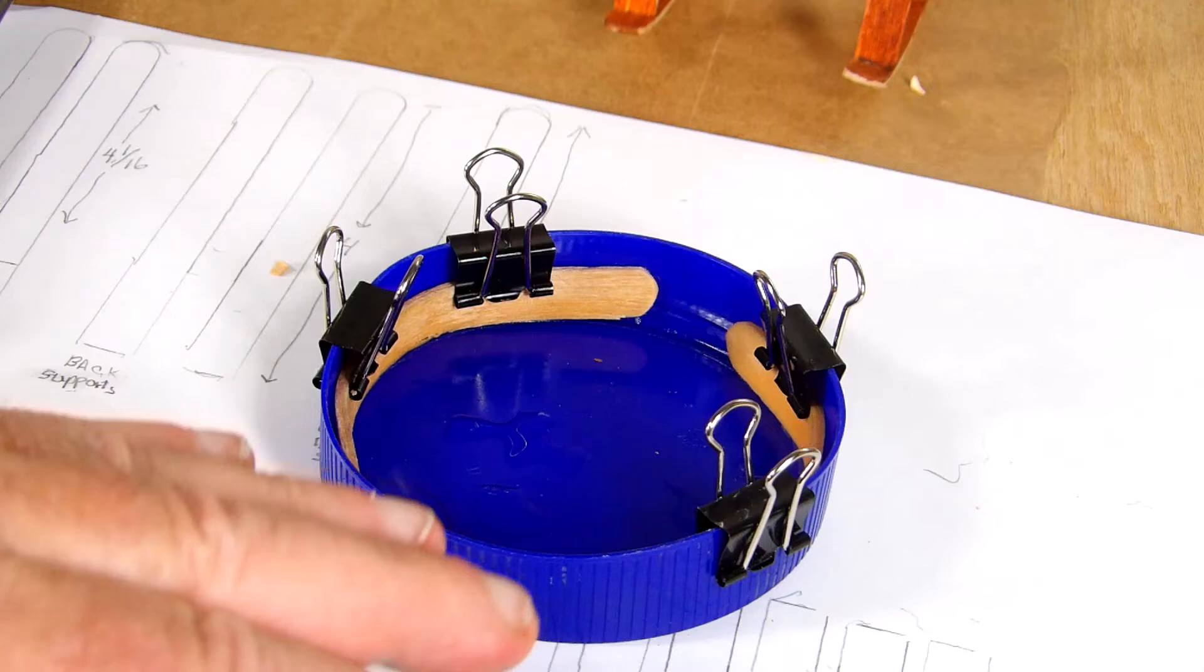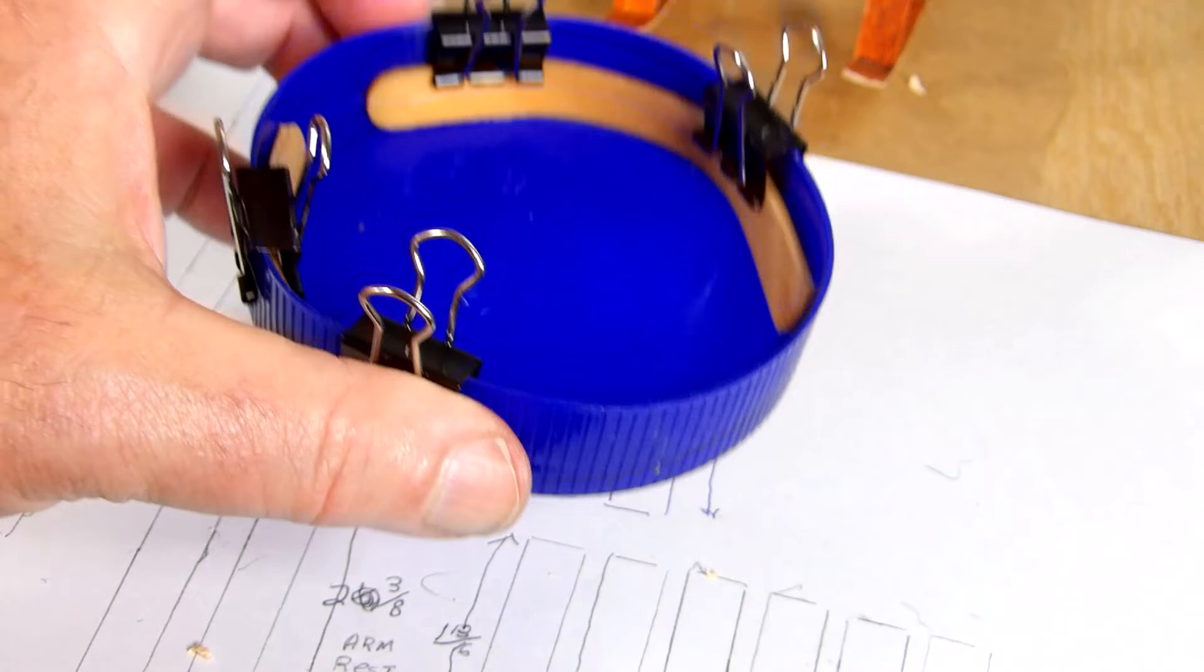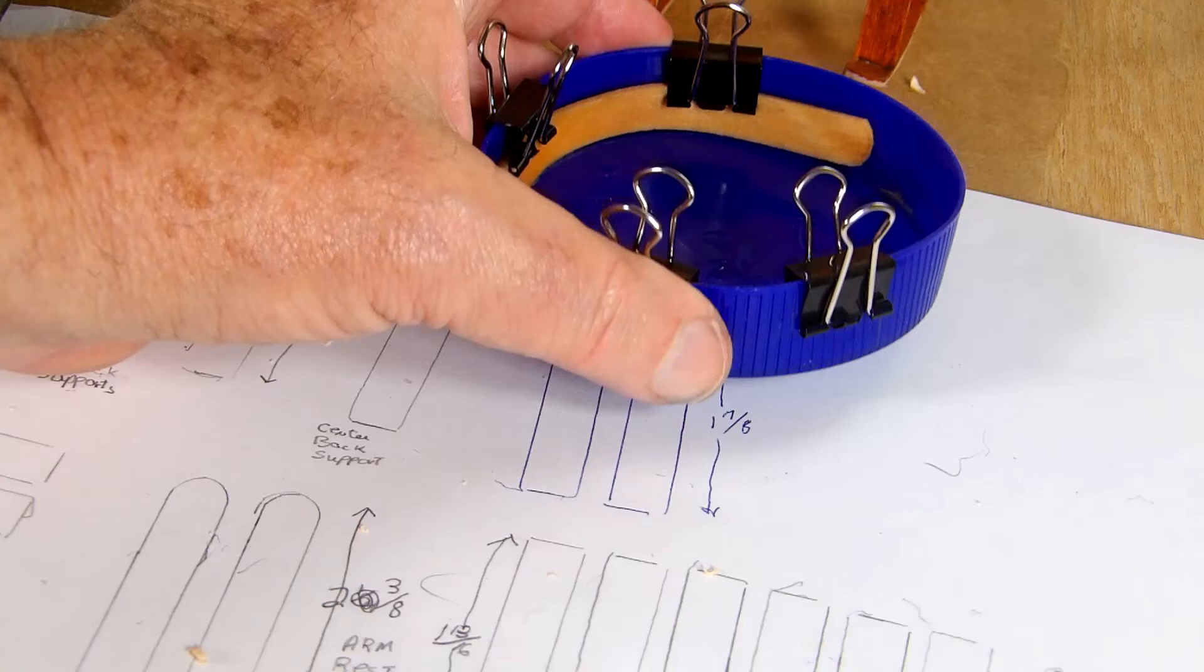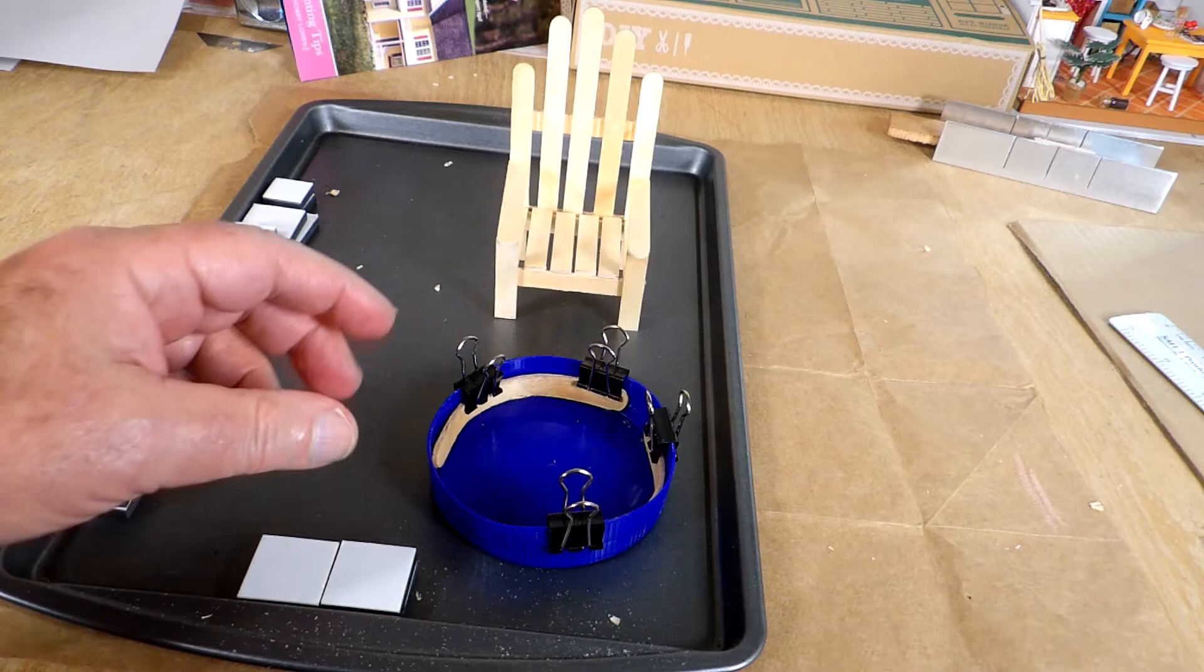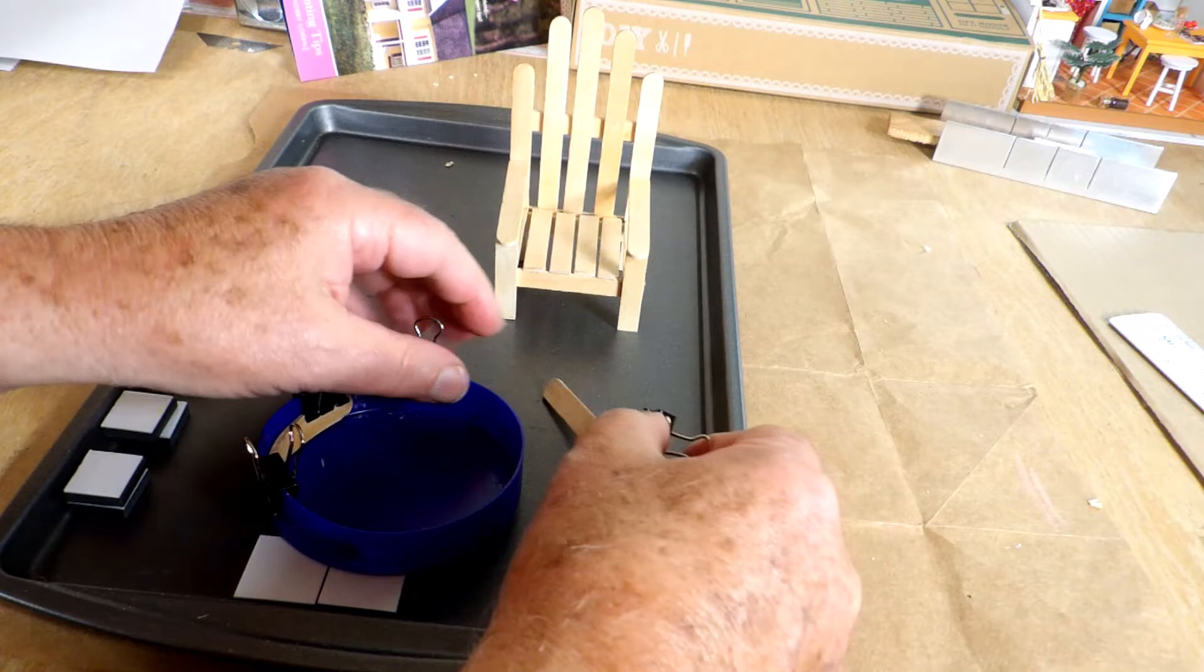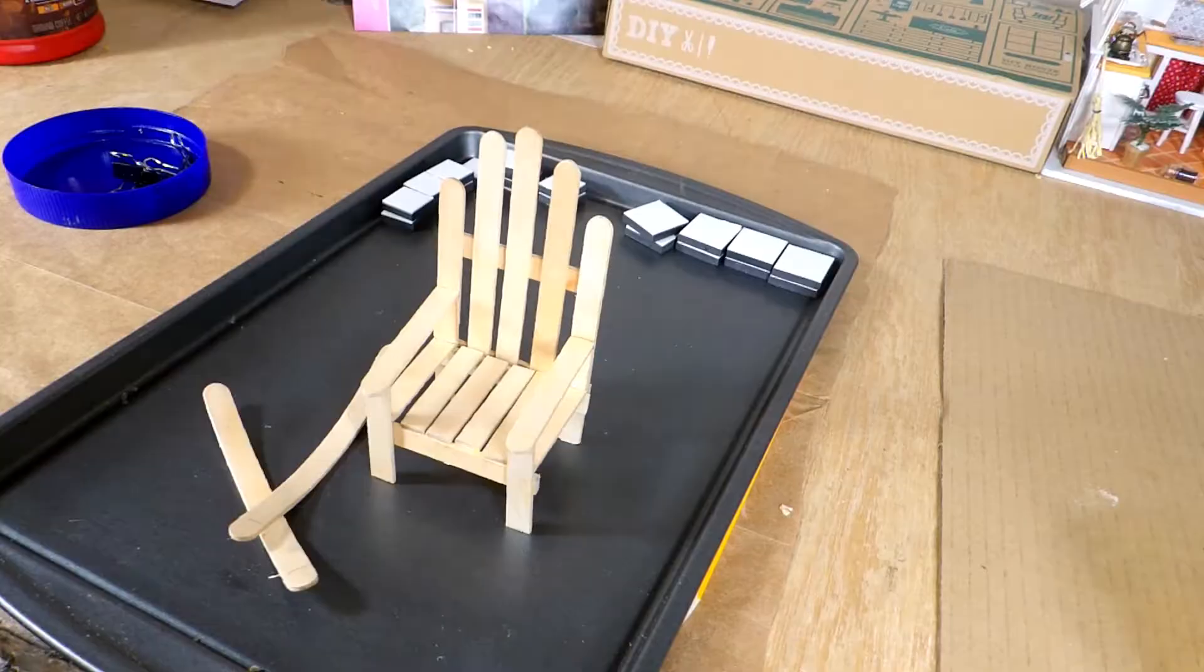So I found that when I used those nails, it left rust marks on them, so this is another way. This is a peanut butter top, and I have them in there with clips. And I think that will work as another way.